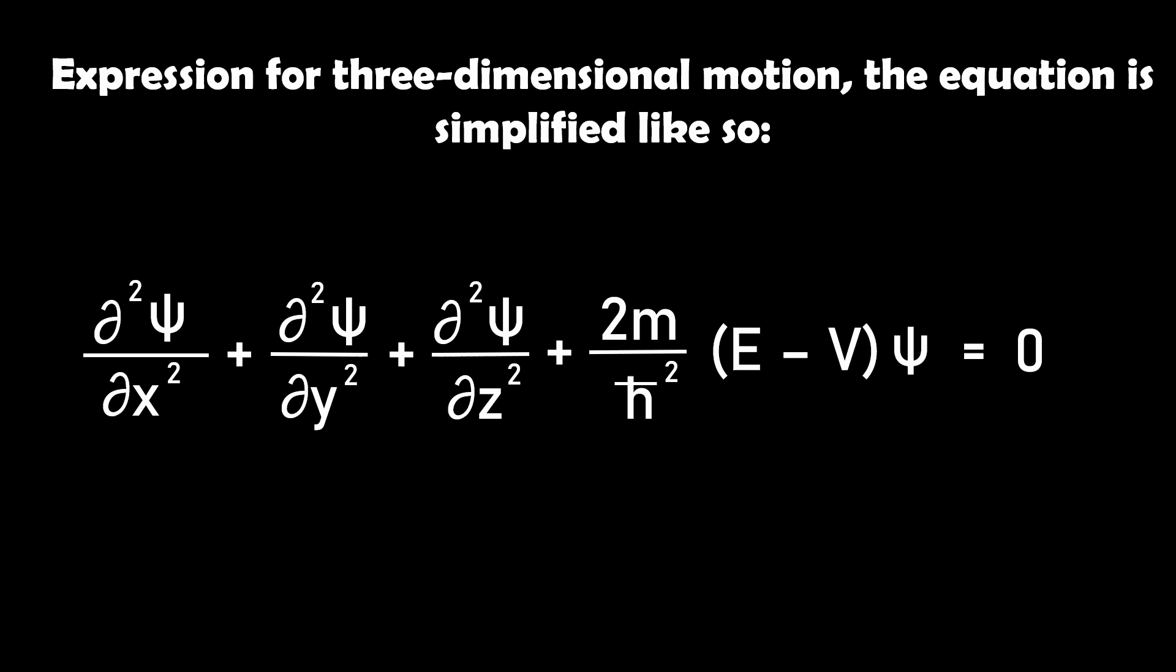So to summarize, solutions to the Schrödinger equation describe the behavior and probable location of an electron within an atomic orbital. They reveal the quantized energy levels of electrons. In essence, understanding and solving this equation allows us to predict the energy levels, orbital shapes, and behavior of electrons in atoms, forming the basis for much of modern chemistry and physics.